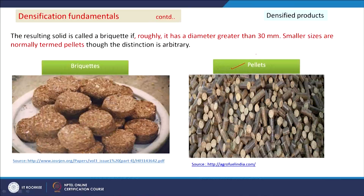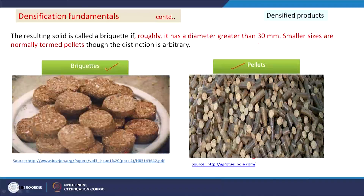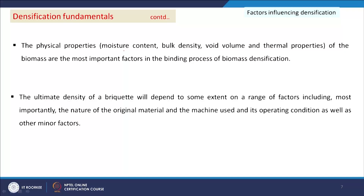After applying pressure, the dense biomass and waste will be either in pellet form or briquette form. Pellets are relatively smaller in diameter and briquettes are bigger. The typical limit distinguishing them is 30 mm diameter — if diameter is greater than 30 mm it is called briquettes, and if less than 30 mm it is pellets, though this distinction is rough and arbitrary.